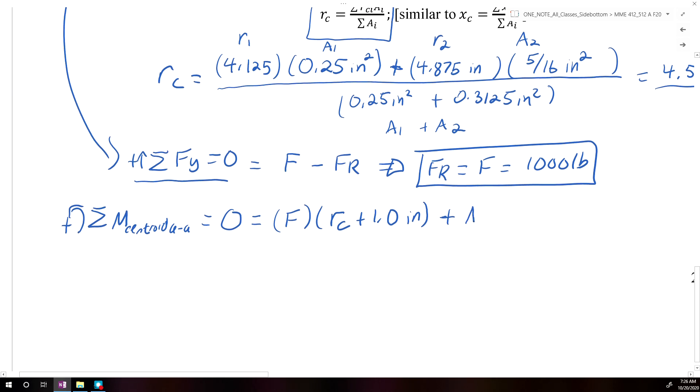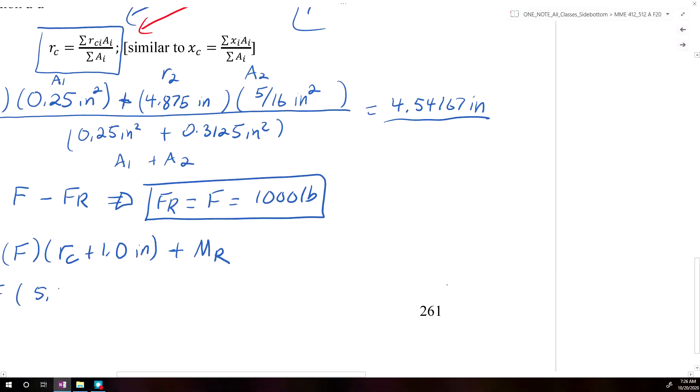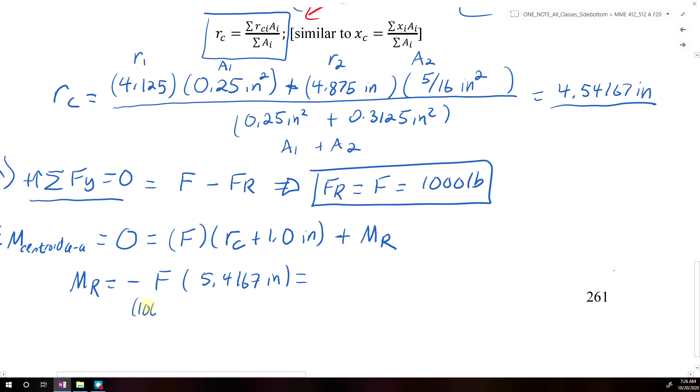So that's our centroid moment, our reaction moment. So our reaction moment is going to be equal to negative F times 5.54167 inches. So F is just equal to 1,000 pounds, so if we just plug all that in, we would get minus 5,542 pound-inches.